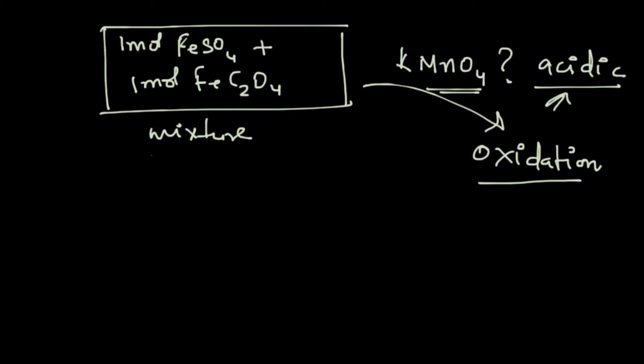Hi guys, in this video we take a look at a question that was asked by Pankaj. Now we have a mixture of 1 mol FeSO4 and 1 mol FeC2O4. These two substances do not react with each other, and then we need to oxidize these substances. For that we are using KMnO4, and in the question we need to find out that if the medium is acidic, then how much KMnO4 will be required to carry out the oxidation process.